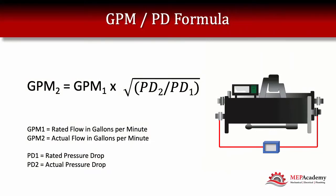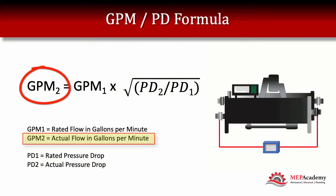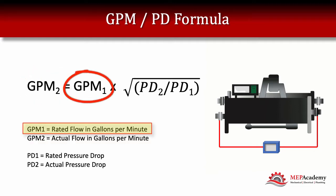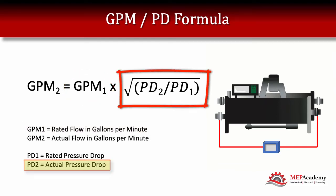In this equation, GPM2 is the actual flow rate that we're going to calculate. It could be for any coil, whether in a chiller, fan coil, or heat exchanger. The rated GPM is GPM1 times the square root of pressure drop 2 (PD2), which is the actual pressure drop that we are going to measure. This is different than the rated pressure drop, which is PD1 — the pressure drop across the chiller's evaporator, condenser, heat exchanger, or fan coil that you're trying to measure.